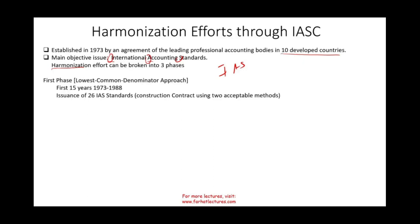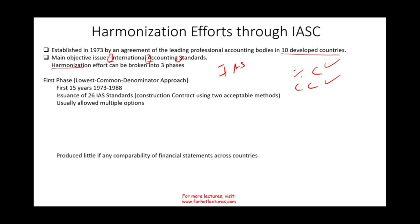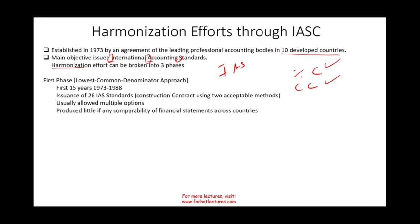For example, for construction contracts, they said there are two acceptable methods: percentage of completion and the completed contract method. All countries would use one of those two. The standards usually allowed multiple options and did not limit countries to any particular one, but they provided the most common approaches. However, it produced little or no comparability of financial statements across countries — those 26 standards did not really increase comparability.